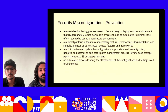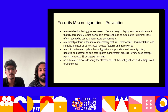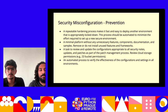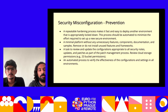General tips to prevent security misconfiguration: a repeatable hardening process is needed to deploy apps to different environments; unnecessary features or dependencies must be removed from production; configurations should be periodically reviewed and updated, such as monitoring cloud storage permissions like S3 bucket permissions; and security testing and vulnerability scanning should be automated across all environments including dev, staging, and production.